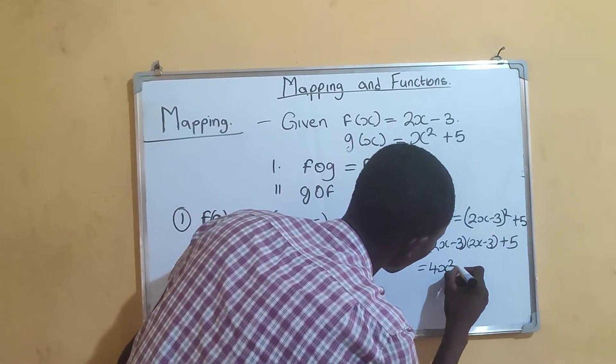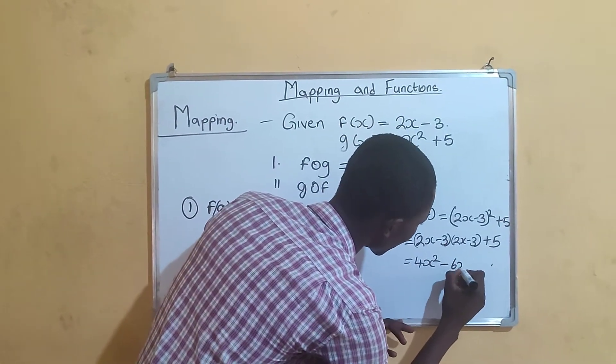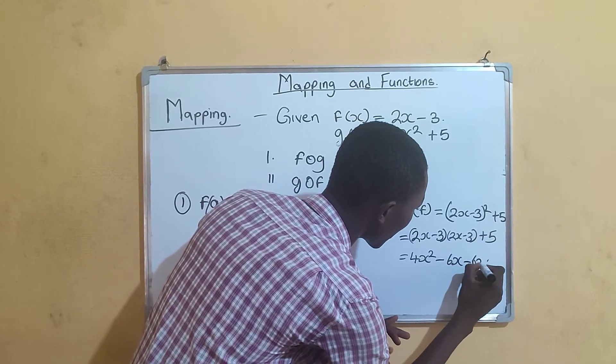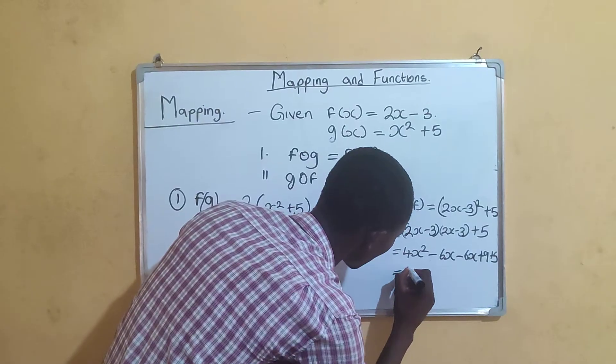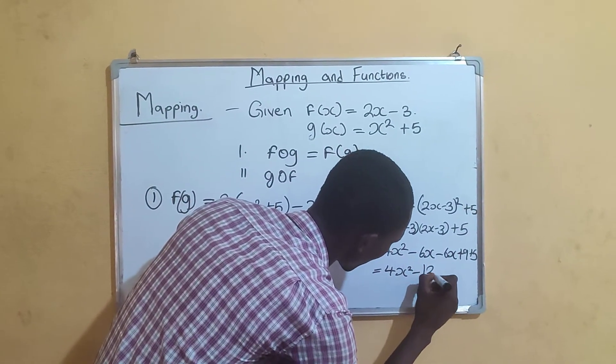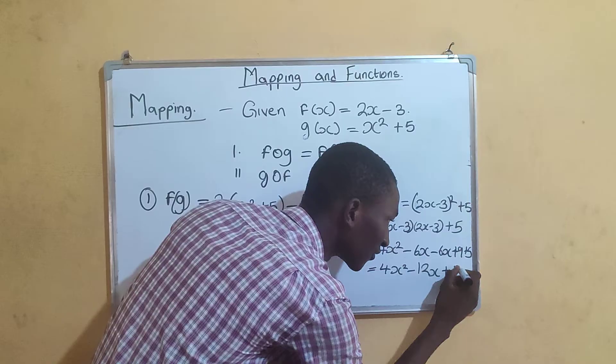So that's 4x squared minus 12x plus 14. That's just how to map - mapping, putting another function into a function.